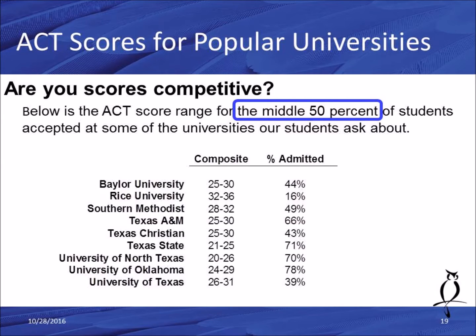Now let's look at some ACT scores for popular universities among our students — this will help you answer whether your scores are competitive. These are score ranges for the middle 50th percentile of students who were accepted. Listed schools include Baylor, Rice, SMU, Texas A&M, TCU, Texas State, UNT, University of Oklahoma, and University of Texas. For example, Baylor's range is 25 to 30 — meaning 25 of those 100 accepted students scored below 25, and 25 scored above 30.